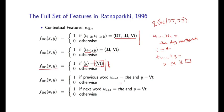Other features Ratnaparkhi used include one that looks at the label y equal to VT and the identity of the previous word — one of many features conjoining the previous word with the current tag. This is very different from anything in HMMs; hidden Markov models don't make use of features conjoining the previous word with the current tag, and it would be quite difficult to extend HMMs to incorporate this information. There is also a feature looking at the identity of the next word and the current tag.